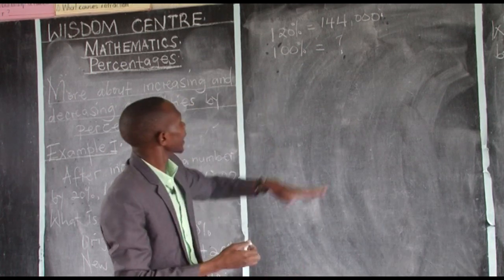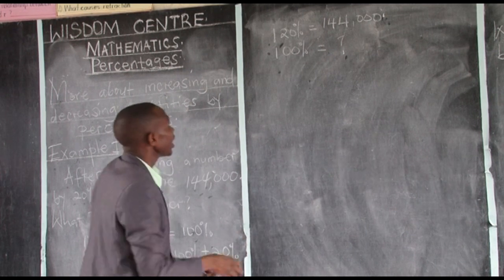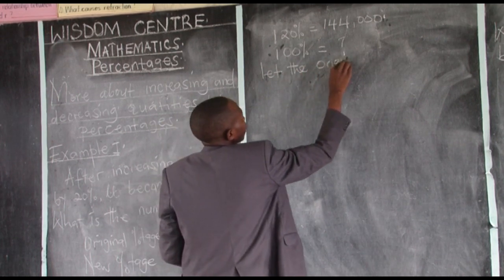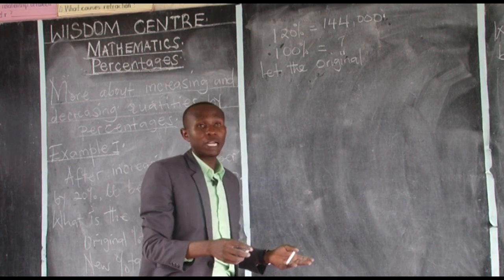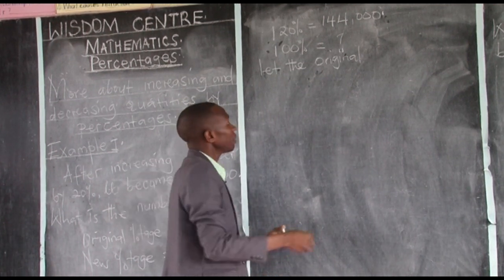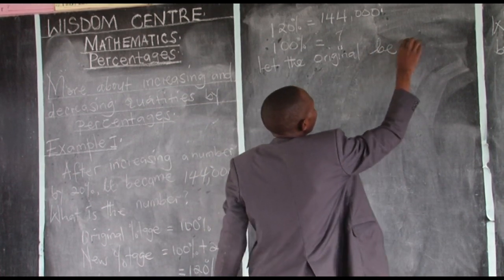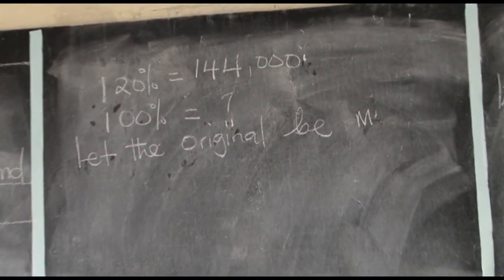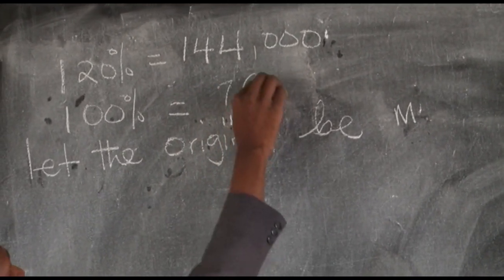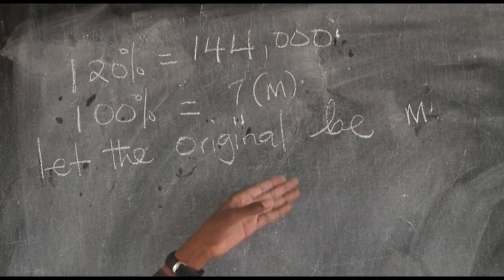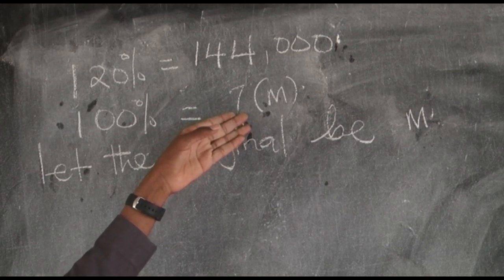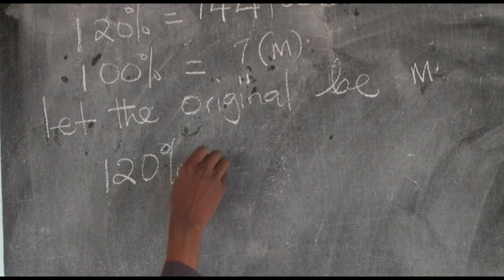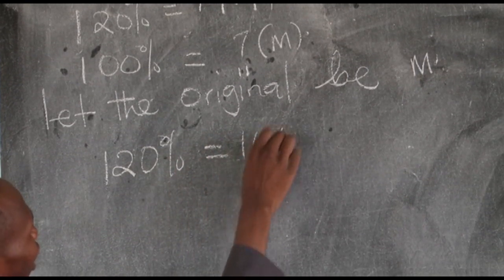Before going to the next step, we ask for permission: let the original number be represented by M. Where there is a question mark, we replace it with M, because we have already asked for permission to use M as the original number. Then we say: 120% is equivalent to 144,000.